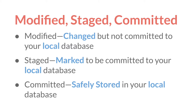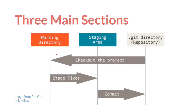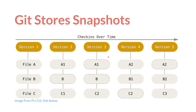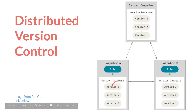That's looking at it from the top down, from the distributed system all the way down to the files. Now let's reverse those slides and look at it from the bottom up. Files can be in three states: modified, staged, or committed. You are changing your files in the working directory—that's when they are modified. You are staging them in the staging area. And then when you make a commit, you create a new version in your Git repository. The commit is what creates these new versions.